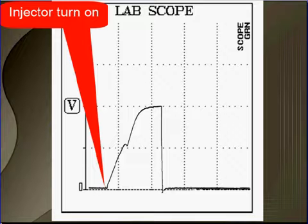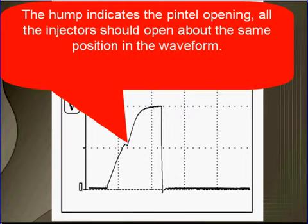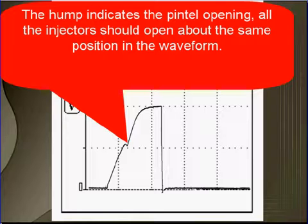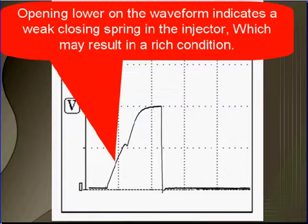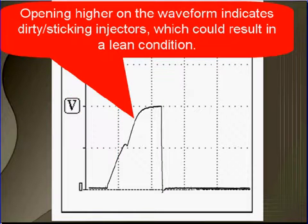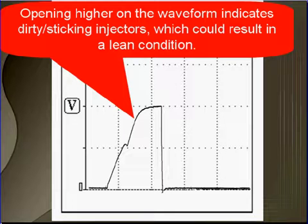As we study the waveform from left to right, just like we did before, when the injector is turned on, current goes up — voltage goes down, current goes up. The hump indicates when the pintle in the injector is opening. All the injectors should open at about the same position on the waveform. When one is opening lower, it indicates a weak closing spring in the injector, which could cause a rich condition. When the opening is higher on the waveform, it indicates a sticking or dirty injector, which could result in a lean condition.